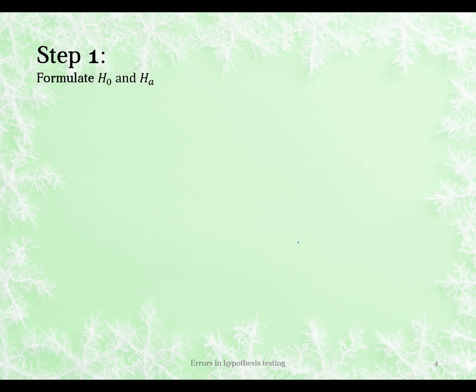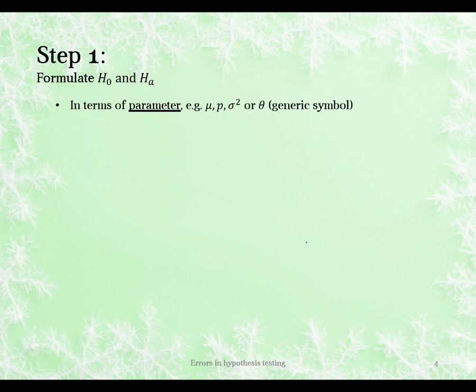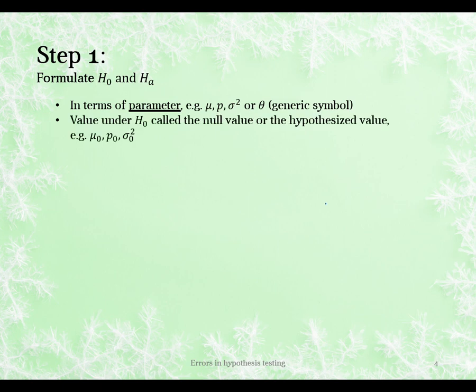Step 1 in hypothesis testing is formulating our null and alternative, which always has to be in terms of a population parameter: mu, p, sigma squared, difference of means (mu1 minus mu2), and so on. We generally denote this generically using theta. We also have a value under the null — the null value or hypothesized value — denoted with a subscript 0, so theta-naught. That is an actual value that our whole theory and test is based around.